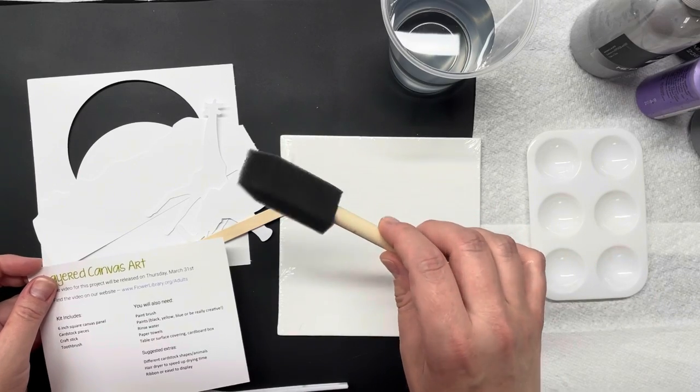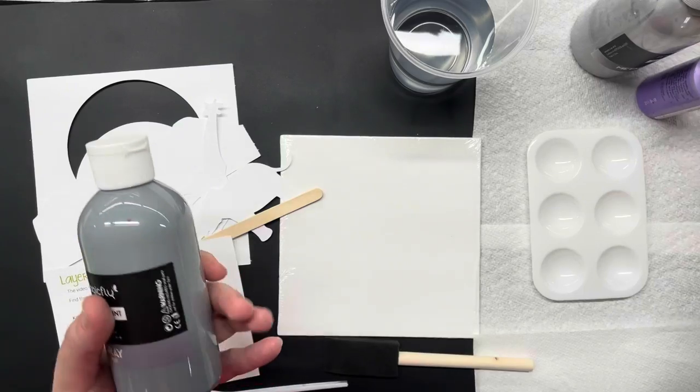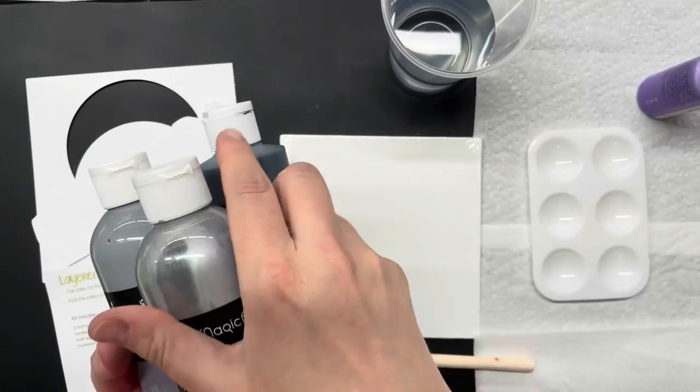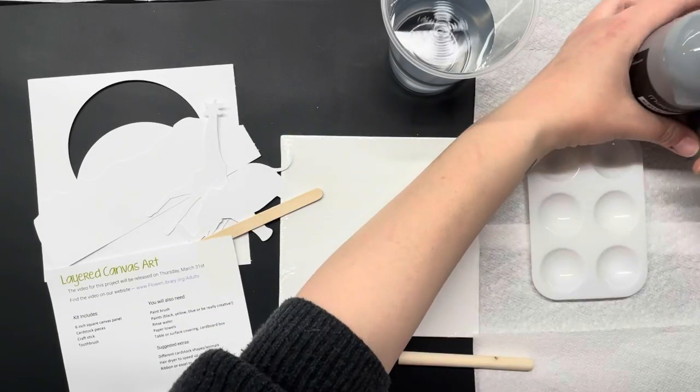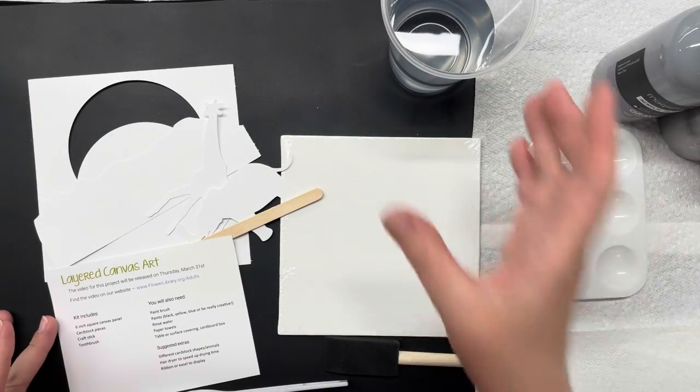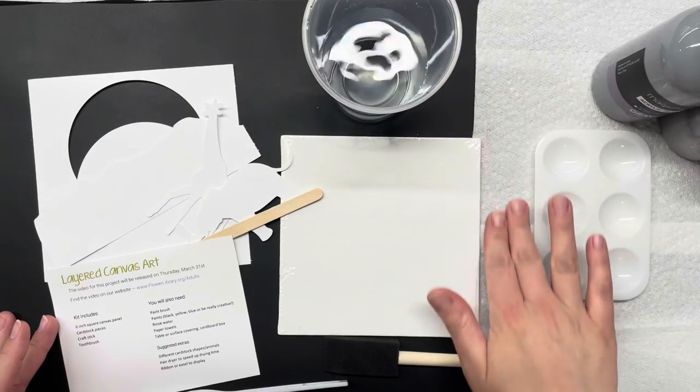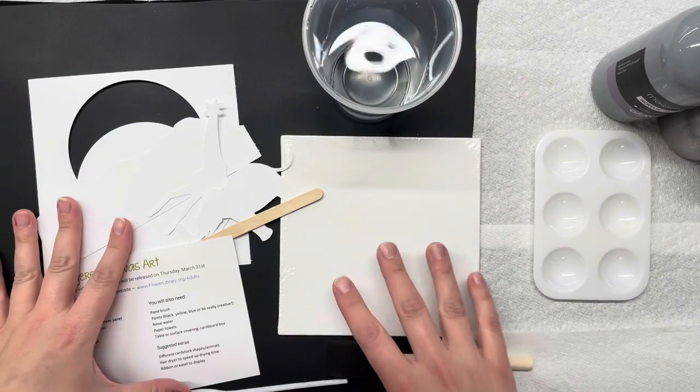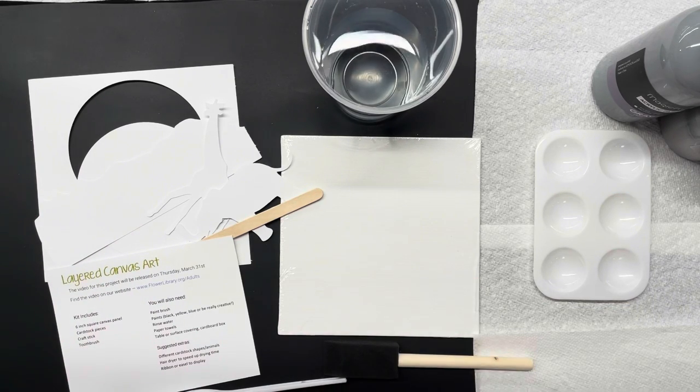Next up you'll need a paint brush, foam brush to quickly do your background color and whatever colors you would like. I have four different colors using black as my background, gray purple accents, rinse water for my toothbrush, paper towels to help protect my surface area along with drying off brushes as needed.